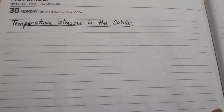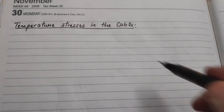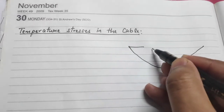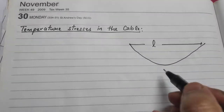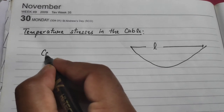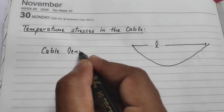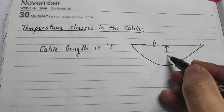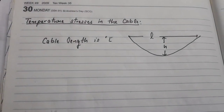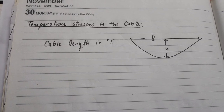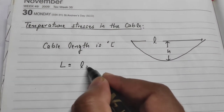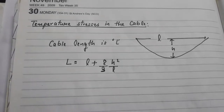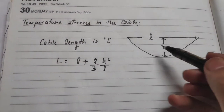We will see about the temperature stresses induced in the cable due to change in temperature. Suppose a cable span length is small L and cable length is capital L. The cable length capital L equals L plus 8H² divided by 3L, where H is the maximum dip.